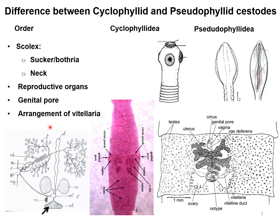The next differential point is the arrangement of the vitellaria. In cyclophyllate cestodes the vitellaria are compact, not scattered throughout the segment. In pseudophyllate cestodes the vitellaria are distributed scatteredly throughout the segment. Looking closely at the diagram, the white dots represent the vitellaria and the black dots represent the testes, both distributed throughout the segment in pseudophyllate cestodes.